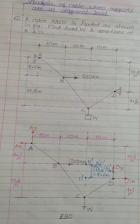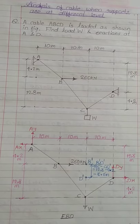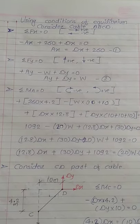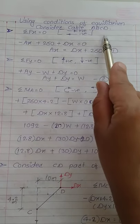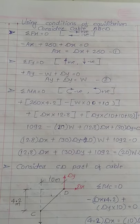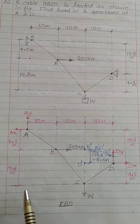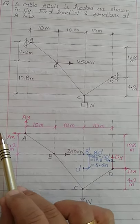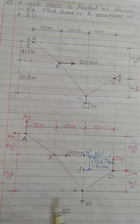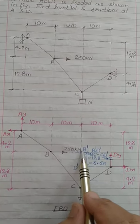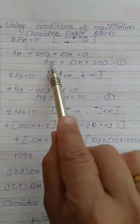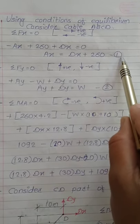Now we will apply the conditions of equilibrium. The first condition is ΣFx = 0. Considering the total cable ABCD and following the sign convention — rightward forces positive, leftward forces negative — there are three horizontal forces: AX going left, 260 kN going right, and DX going right. The equation becomes: −AX + 260 + DX = 0, giving AX = DX + 260. This is Equation 1.